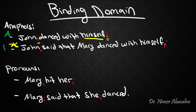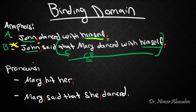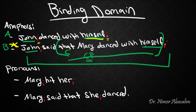What is the difference between sentence A and sentence B? In sentence A, 'himself' and its antecedent are in the same clause. But in sentence B, they are in different clauses. We have a complementizer 'that', which indicates a CP — an embedded clause. So 'himself' is in the embedded clause while the antecedent John is in the main clause.